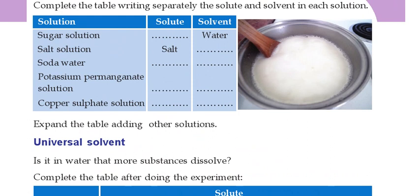Then copper sulfate solution. That is also a crystal-like, blue-colored form. The color of copper sulfate is blue — sky blue color. Copper sulfate solution is also prepared by adding water. So which one is the solute? Copper sulfate is the solute. Water is the solvent.